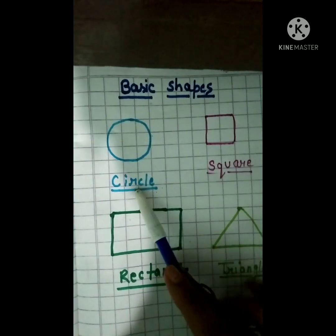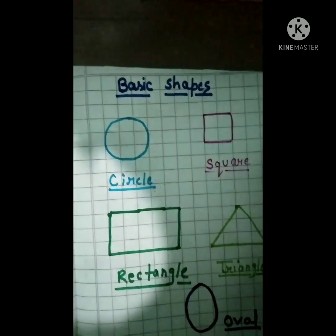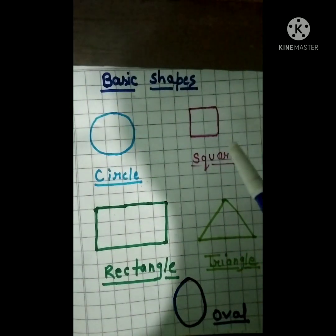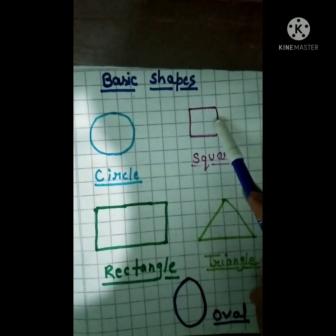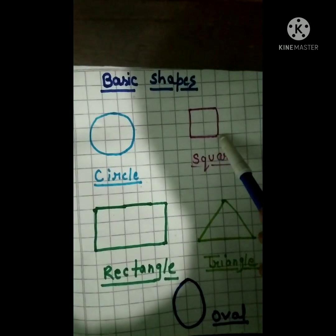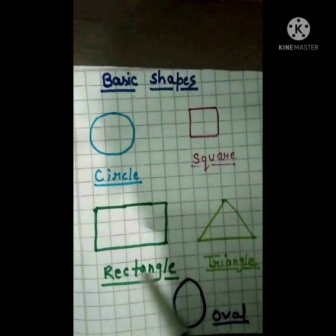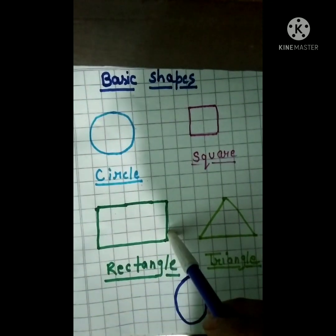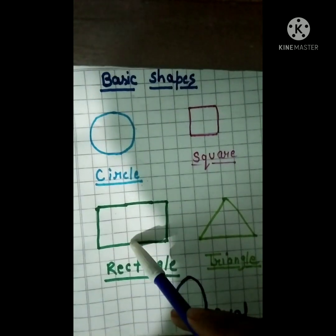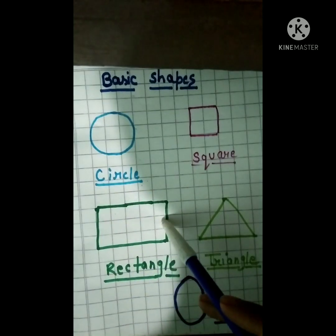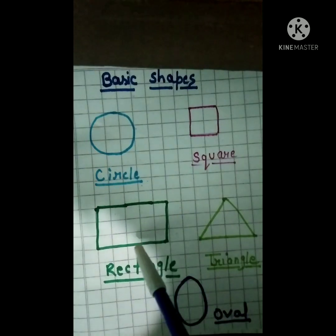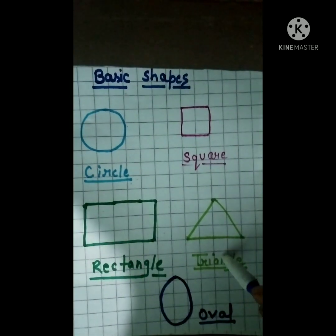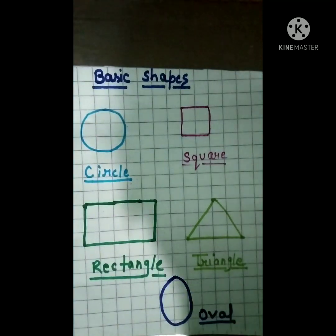The shape is circle — round, round. And square has four corners — 1, 2, 3, and 4 — and four sides equal. And this is a rectangle. Rectangle also has four sides, but the upper and lower are equal and the right and left are equal. Next, triangle — 1, 2, 3 — three corners. And oval has no corners.